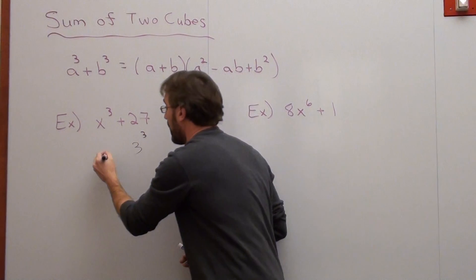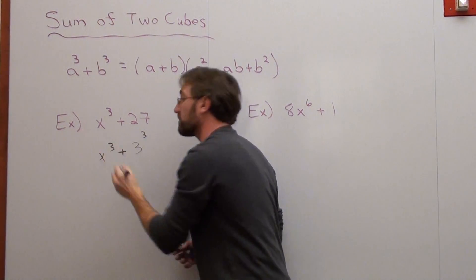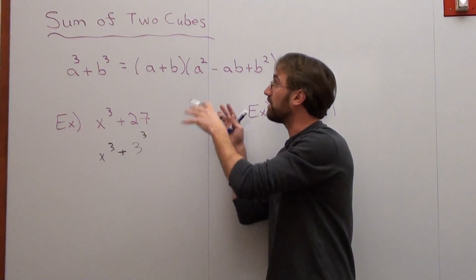It is. 3 times 3 times 3 is 27. And it falls under this model, where you can factor it as a sum of two perfect cubes.